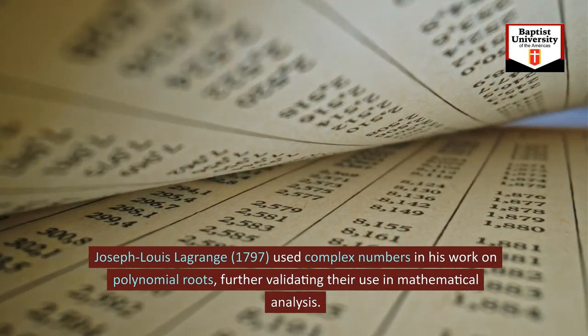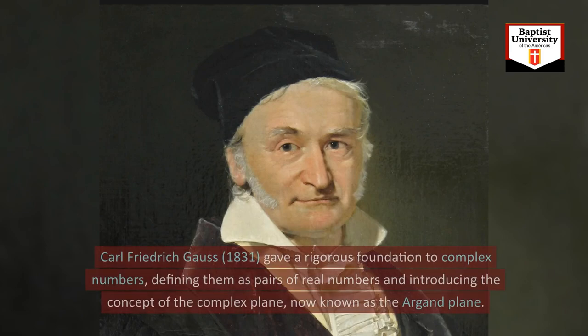Carl Friedrich Gauss, 1831, gave a rigorous foundation to complex numbers, defining them as pairs of real numbers and introducing the concept of the complex plane, now known as the Argand plane.